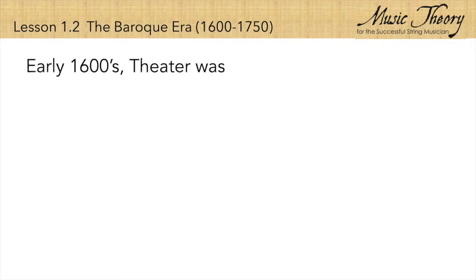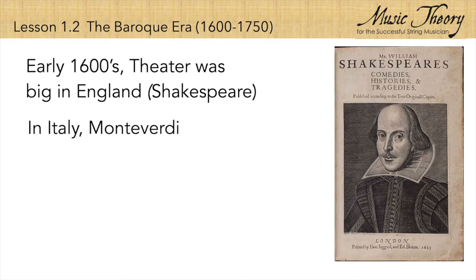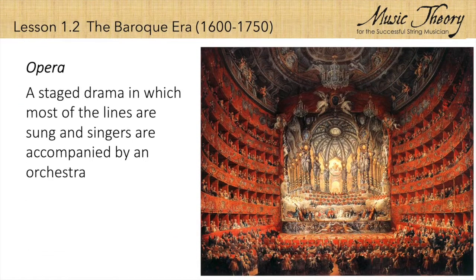In the early 1600s, theater was big in England, where Shakespeare was writing his plays. At the same time, in Italy, a brilliant composer named Monteverdi was setting his own plays to music in ways that had never been done before. It was a new art form known as opera. The actors sang their lines, and they were accompanied by instruments.